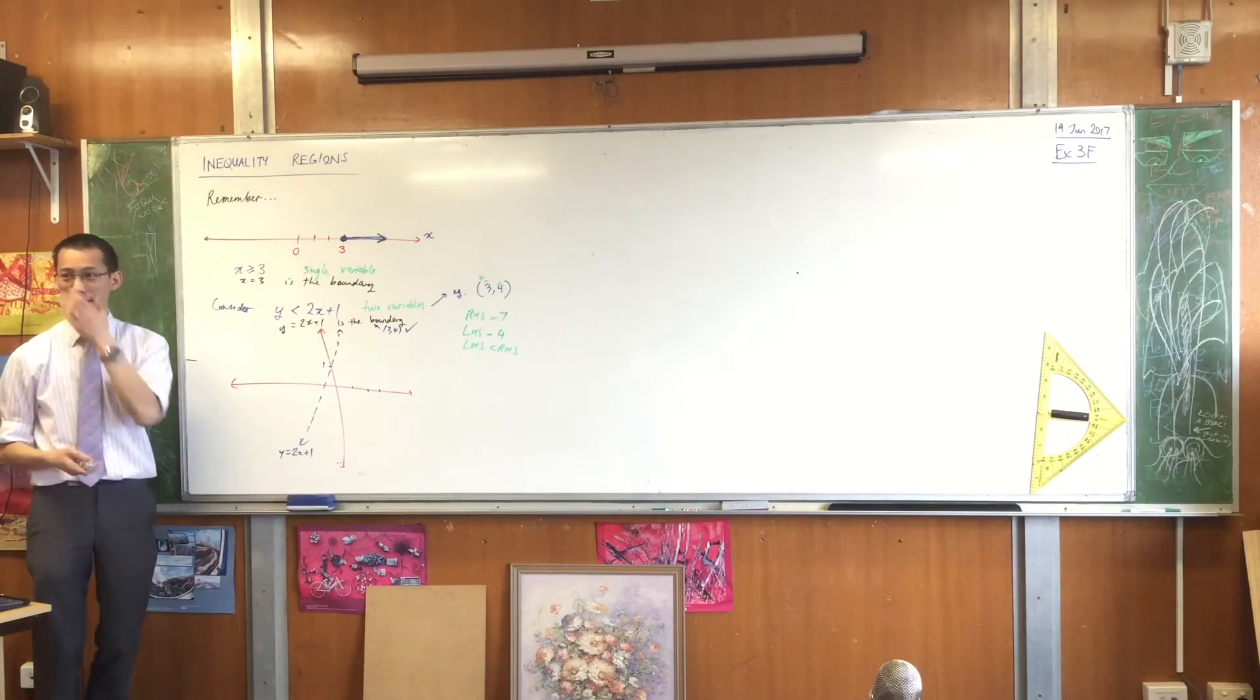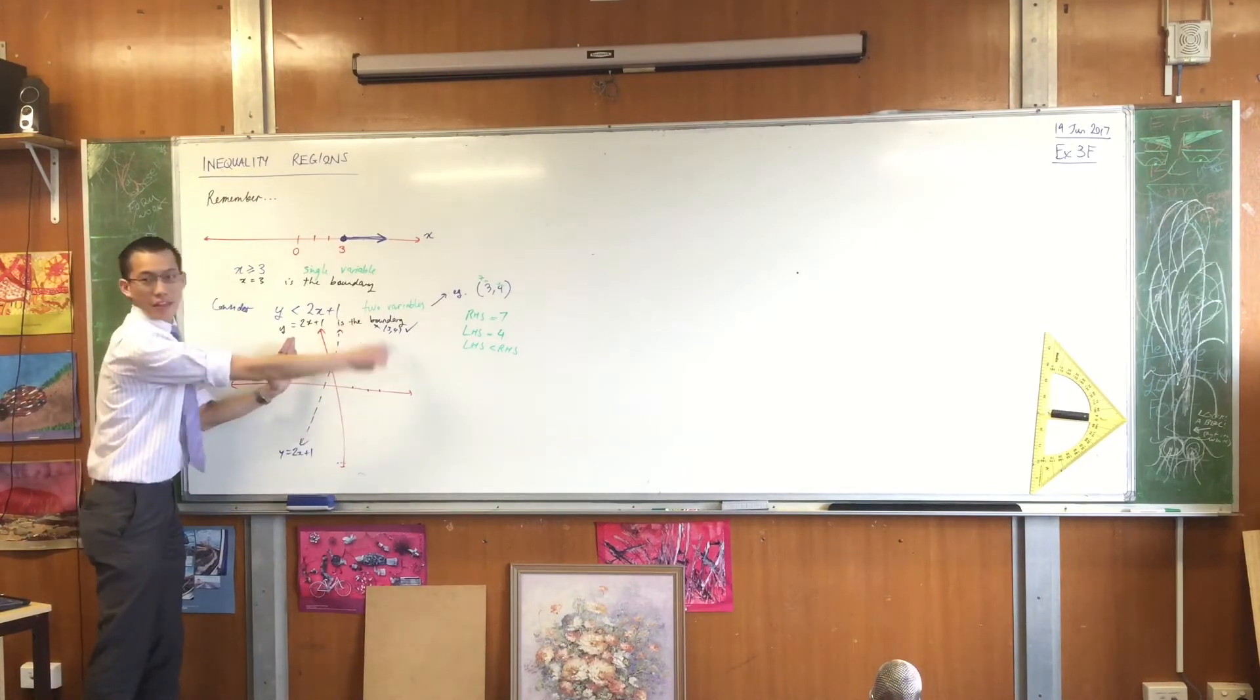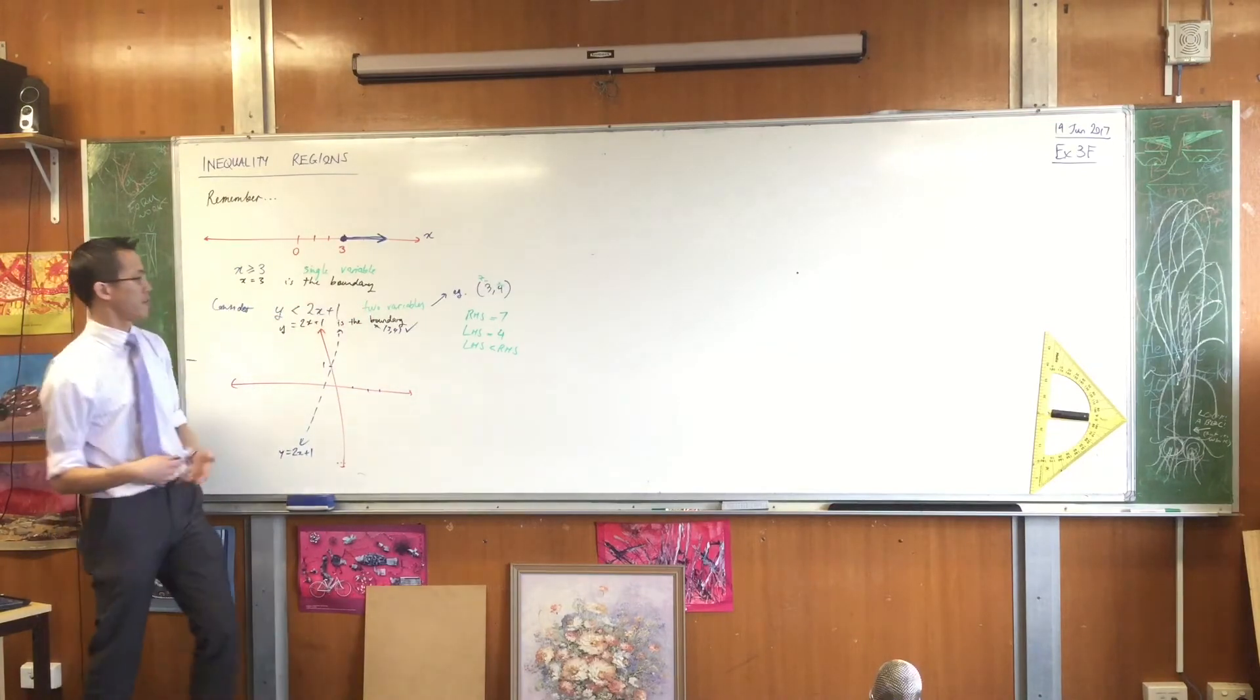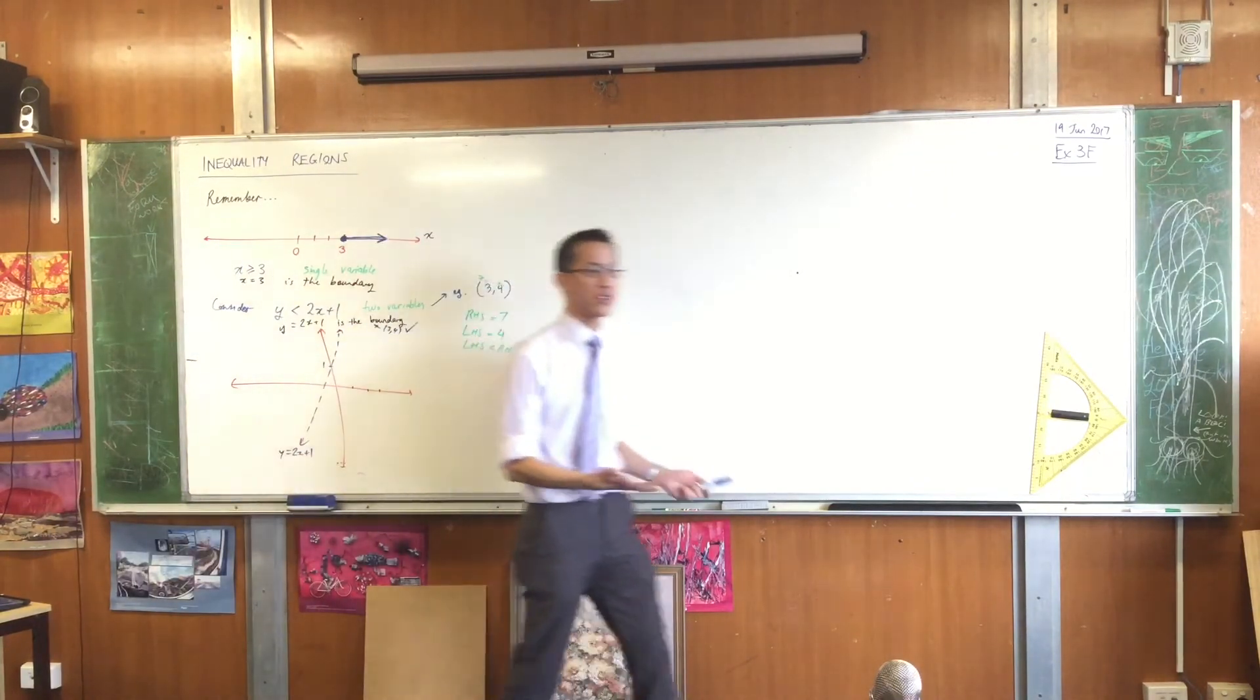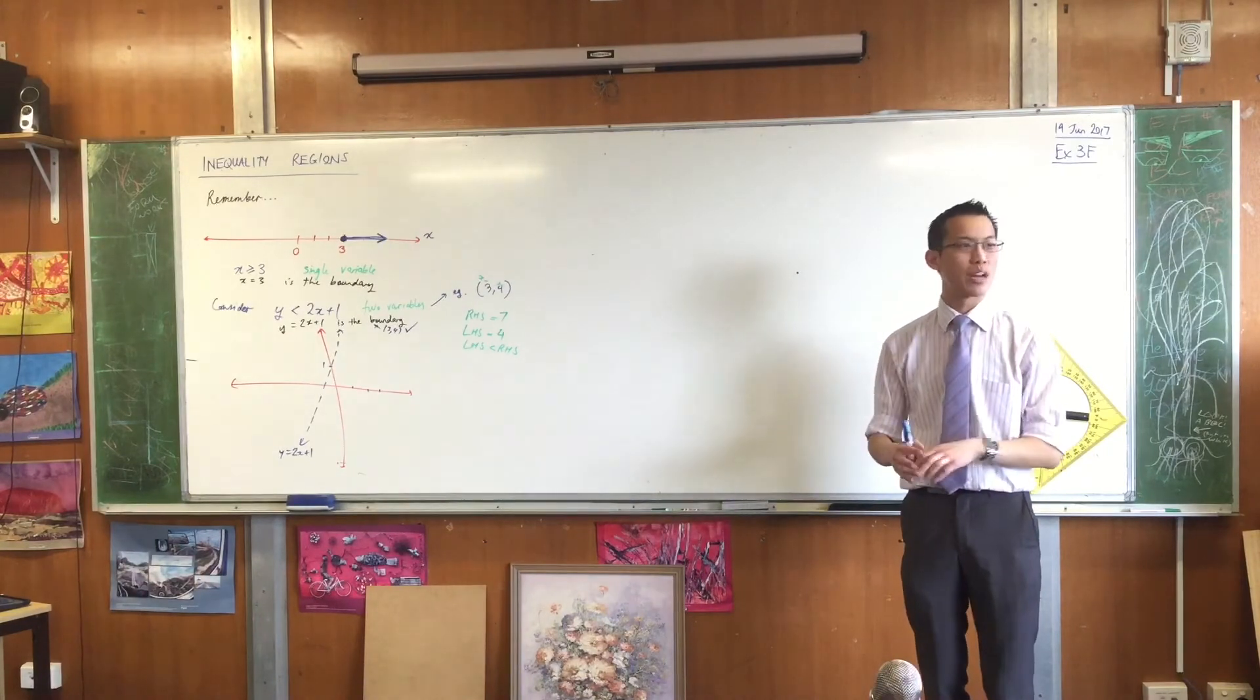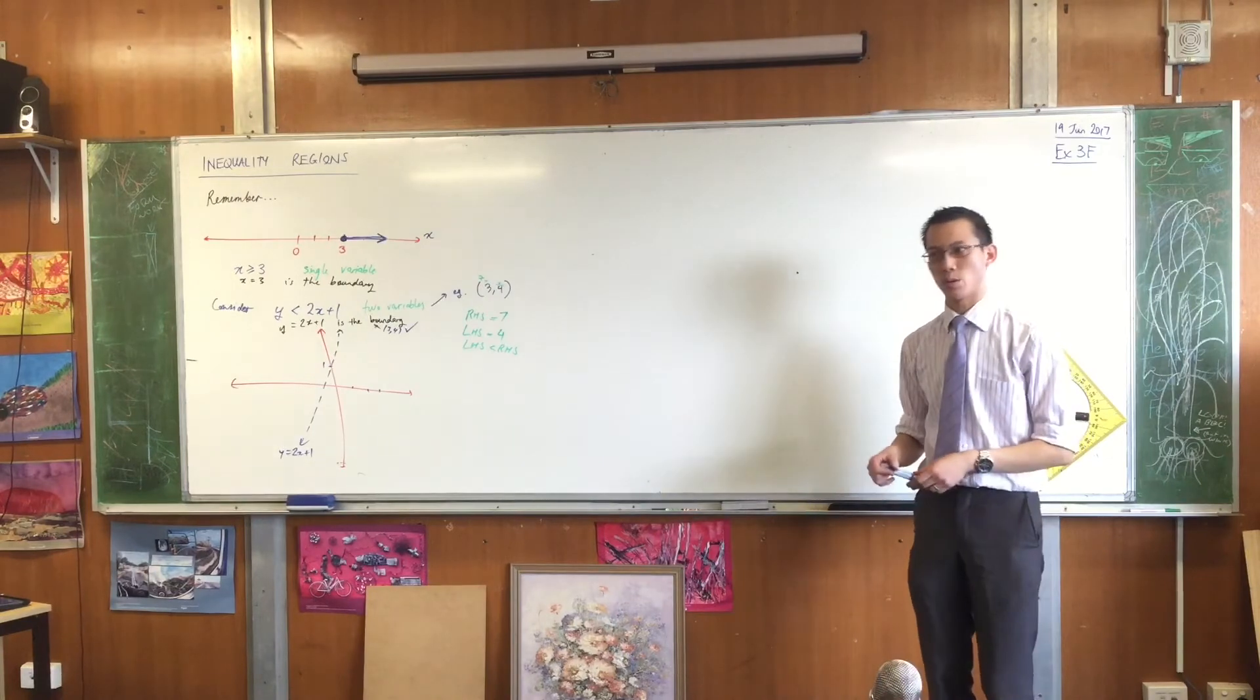In fact, what you'll find is, because this is the boundary, any point you pick on this side of the boundary will also satisfy the inequality. Here's another easy one you can put in. 0, 0, the origin. In fact, I'm going to encourage you to choose the origin whenever you possibly can. 0, 0 also satisfies the inequality. Can you see why?